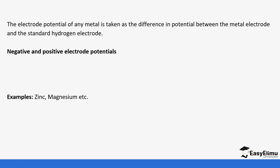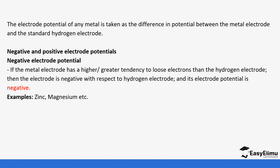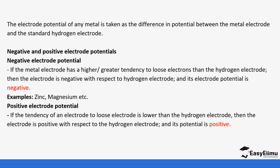When you get that difference, you can get negative or positive values. A negative electrode potential means the metal electrode has a higher tendency to lose electrons than hydrogen, so the electrode is negative with respect to the hydrogen electrode. If you compare metals with hydrogen, their electrode potentials are negative, indicating they have a higher tendency to lose electrons. Positive values indicate a higher tendency to gain electrons.